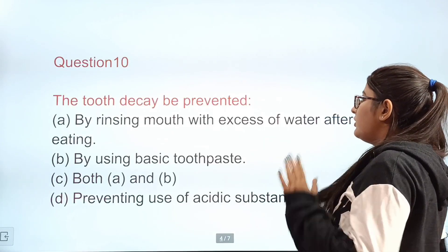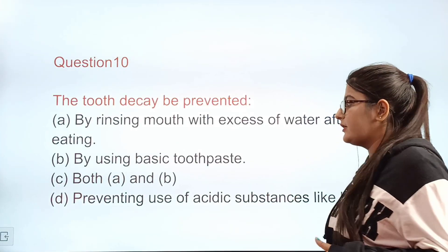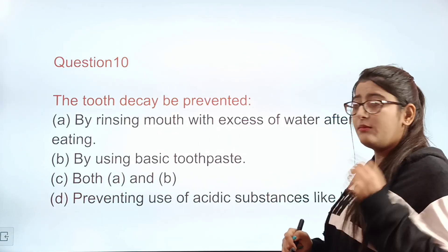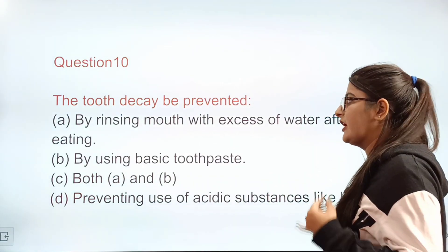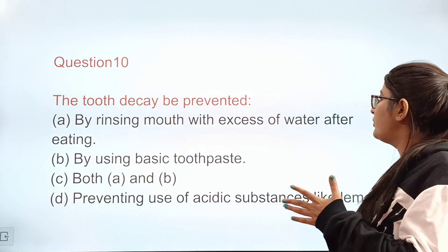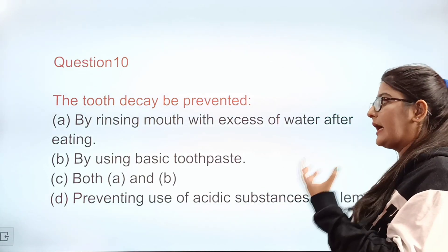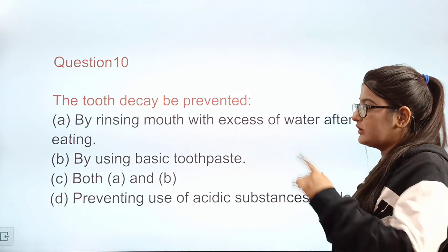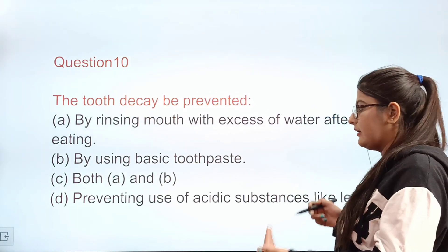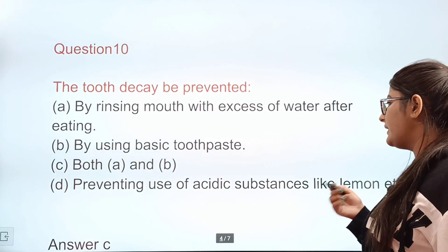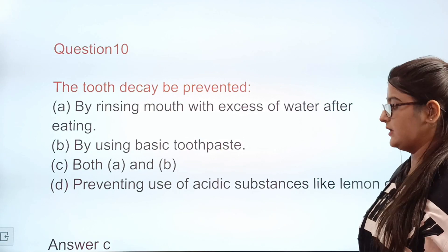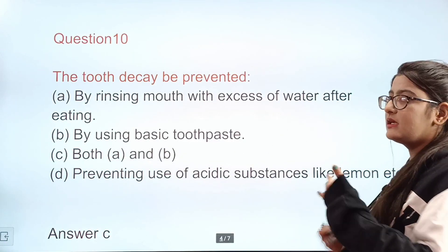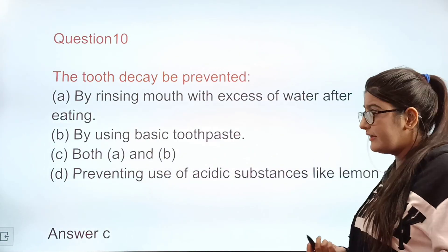Question 10: Tooth decay can be prevented by — Option A: rinsing mouth with excess water after eating. Option B: using a basic toothpaste. Option C: both A and B. Option D: preventing use of acidic substances like lemon. Correct answer: C — both rinsing with water and using a basic toothpaste.